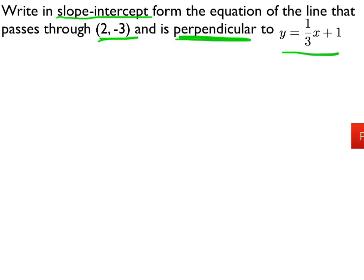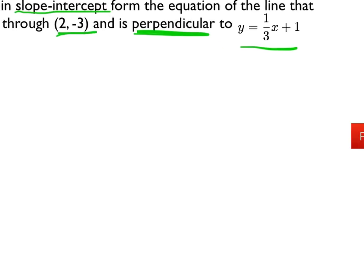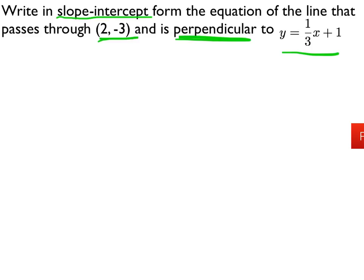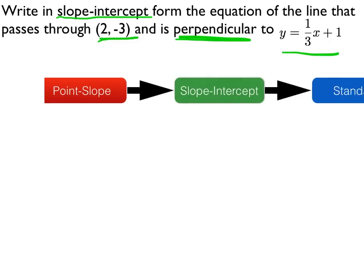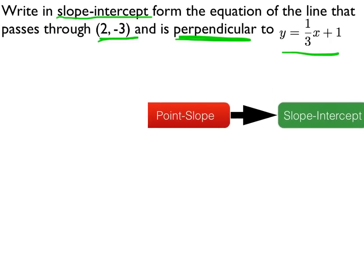So in order to solve this problem, we're still going to use this previous algorithm, these steps: start with point-slope form, go to slope-intercept. However, since we don't need standard form, we're just going to stop when we get to slope-intercept form.